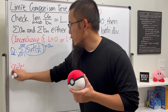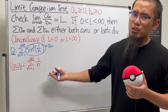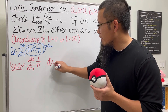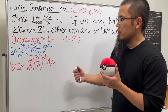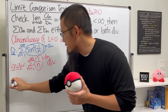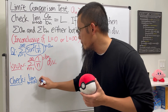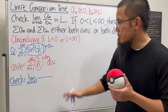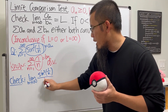Suppose we use the series from n equals one to infinity of 1/n — the famous harmonic series. We know that this series diverges, and this will be our bₙ. Now let's try to draw a connection using the limit comparison test. We check the limit as n goes to infinity of aₙ over bₙ — that is, sin²(1/n) on top and 1/n on the bottom.